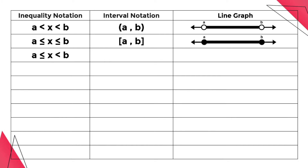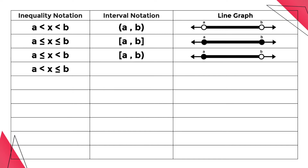For the third one, it means all real numbers x greater than or equal to a but less than b. This is how we write it down in interval notation, and this is how it looks like in the graph. For the fourth one, it means all real numbers x greater than a but less than or equal to b. We write it down in interval notation using open parenthesis a, comma, b, close bracket. And this is how it looks like in the line graph.